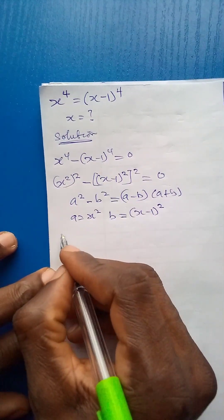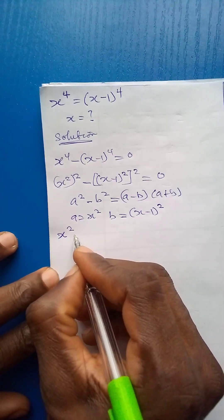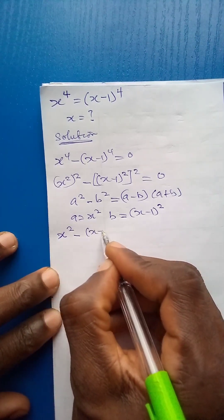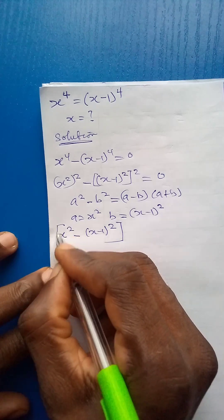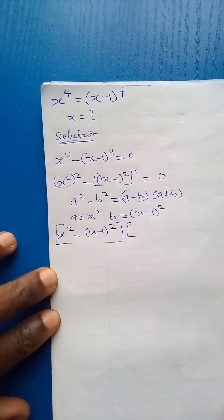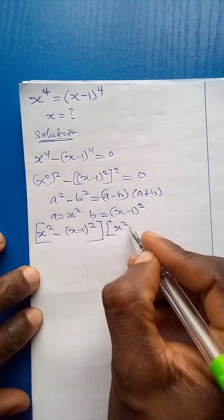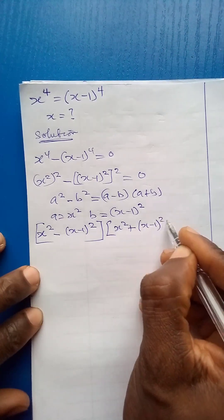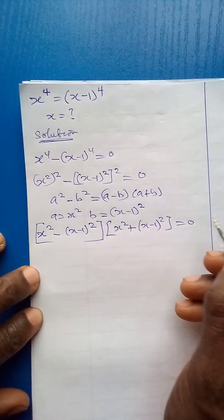It becomes x squared minus x minus 1 squared, in one bracket, times x squared plus x minus 1 squared, in another bracket, equals 0.